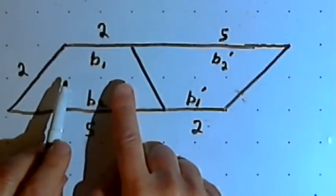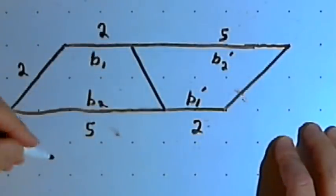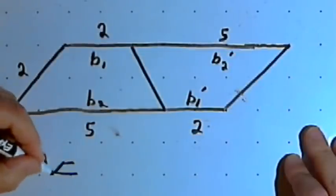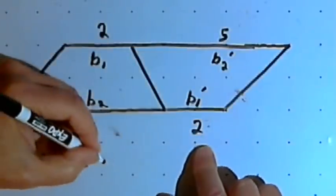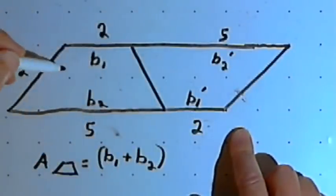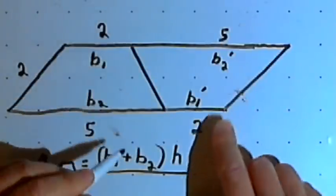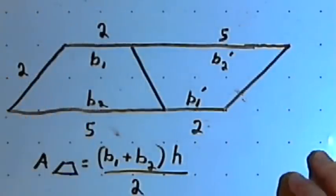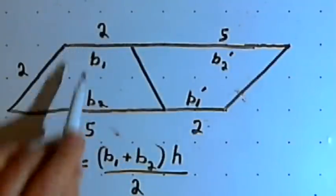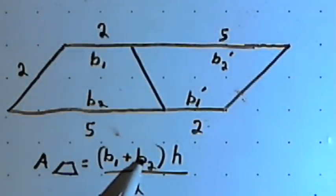Each of the trapezoids is one-half the size of the whole parallelogram. So the formula for the area of a trapezoid is b sub 1 plus b sub 2 — that's like the base of the big parallelogram — times the height h, divided by 2. For a trapezoid, you add the two bases together, multiply by the height, and divide by 2. The formula is: (b₁ + b₂) × h ÷ 2. That gives you the trapezoid's area.